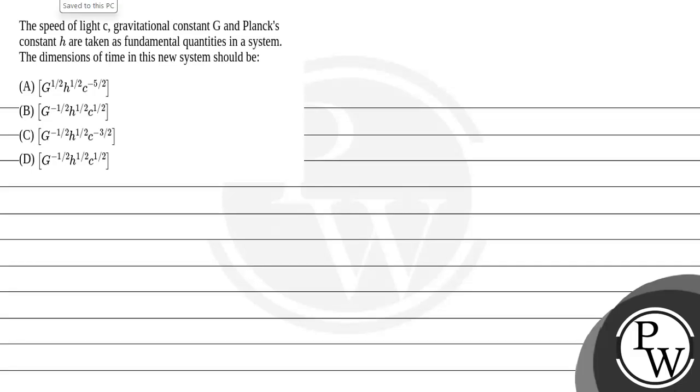Hello, let's read this question. The question says, the speed of light c, gravitational constant G, and Planck's constant h are taken as the fundamental quantities in a system. The dimension of time in the new system should be.